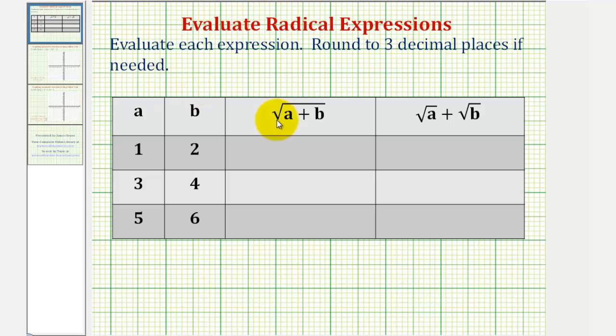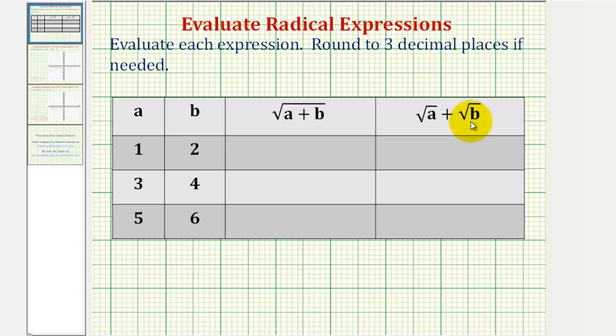We want to evaluate each radical expression given the values of a and b. Notice here we have the square root of a sum, and here we have a sum of square roots.